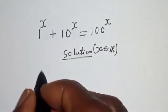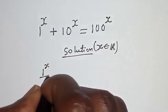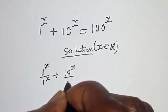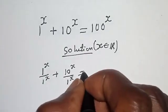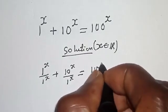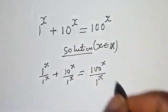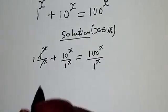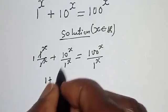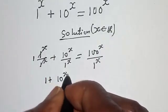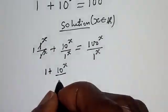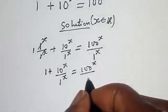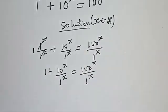Let's divide all through by 1 raised to power s. So we have 1 raised to power s over 1 to the power of s, plus 10 raised to power s over 1 to the power of s, is equal to 100 raised to power s over 1 raised to power s. This will cancel, giving us 1 plus 10 raised to power s over 1 raised to power s, is equal to 100 raised to power s over 1 raised to power s.